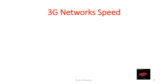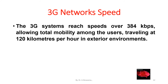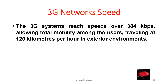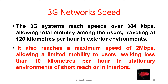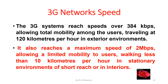3G networks speed: The 3G systems range speeds over 384 kbps, allowing total mobility among users traveling at 120 km per hour in exterior environments. It also reaches a maximum speed of 2 Mbps, allowing limited mobility to users walking less than 10 km per hour in stationary environments of short reach or in interiors.